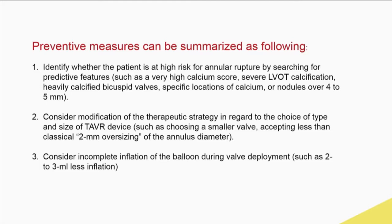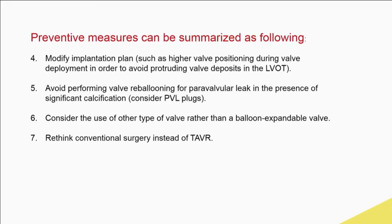In summary, preventive measures include identifying whether a patient is high-risk, spending significant time on CT scans examining the location and severity of calcium, and considering modifying the therapeutic strategy. You can use different sizes and types of valves; the more post-dilation and pre-dilation you do, the more concerning it becomes. Webb has a nice paper showing that with Sapien 3, starting conservatively with lower inflations and working up yielded a paravalvular leak rate of about 3.5%.